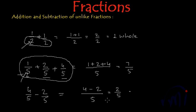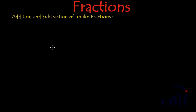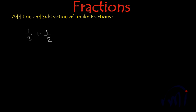Now you remember how we did subtraction and addition of like fractions. So what we do in unlike fractions? Suppose we have unlike fractions like 1 by 3 plus 1 by 2. If we want to add these two fractions, the only method is to write down the fractions and then convert them into their equivalent fractions. Equivalent fractions are the fractions which have the same value as the original fractions.